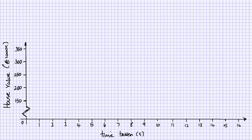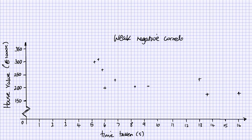Here we have the graph. I haven't got proper graph paper for my background, so I've had to spread these out. Normally I'd go up in fives on actual graph paper. It's just a matter of plotting the points — so 5.2 and 300 would be there, 5.5 and 310 would be there, and so on. What you should be able to see from this is that there is a very slight — say a weak — negative correlation, so the pattern is in this direction.